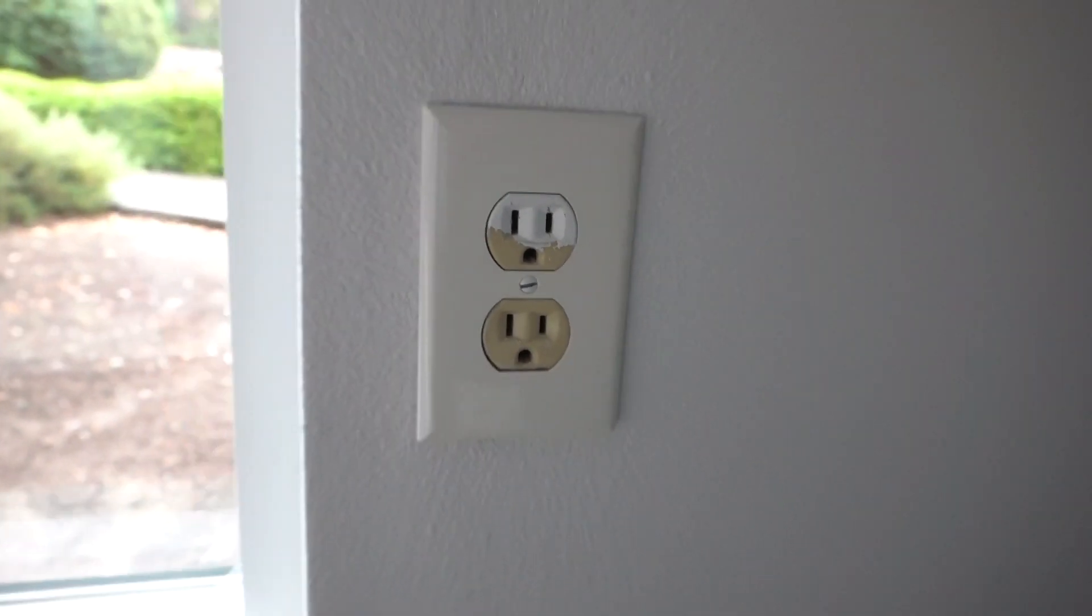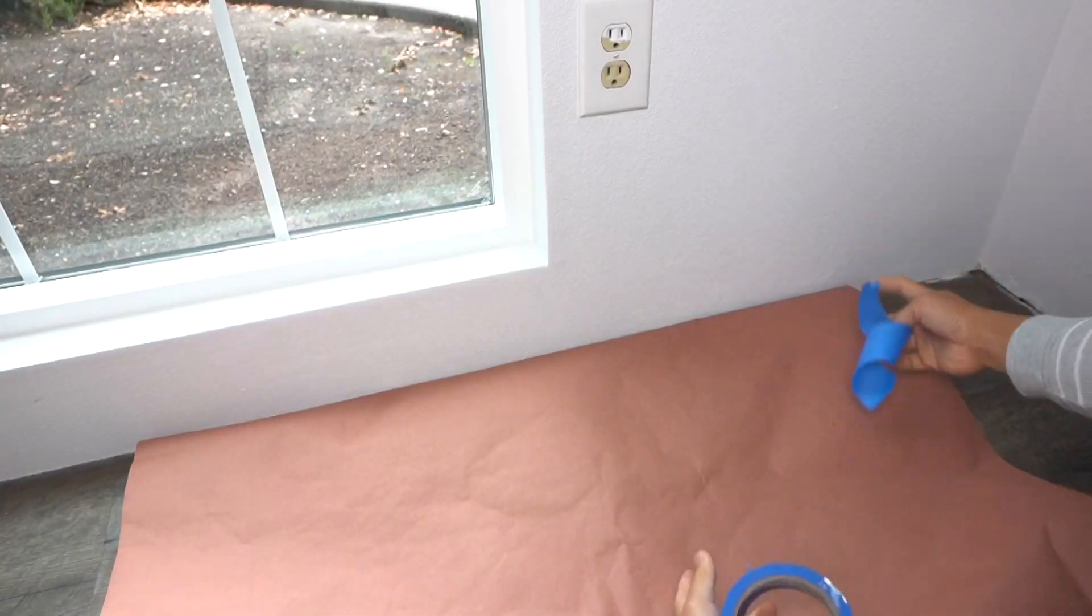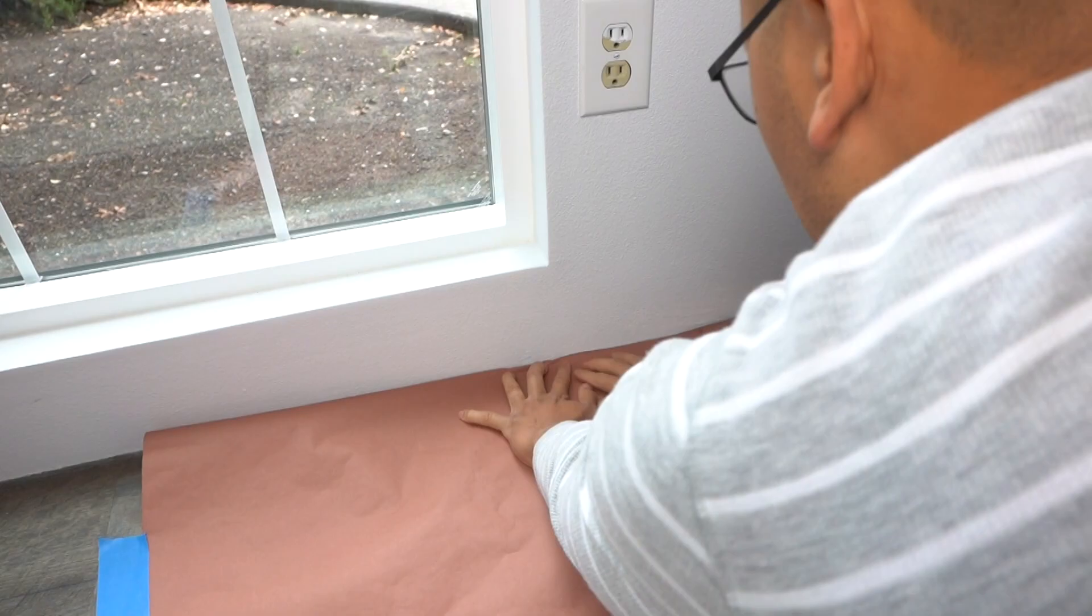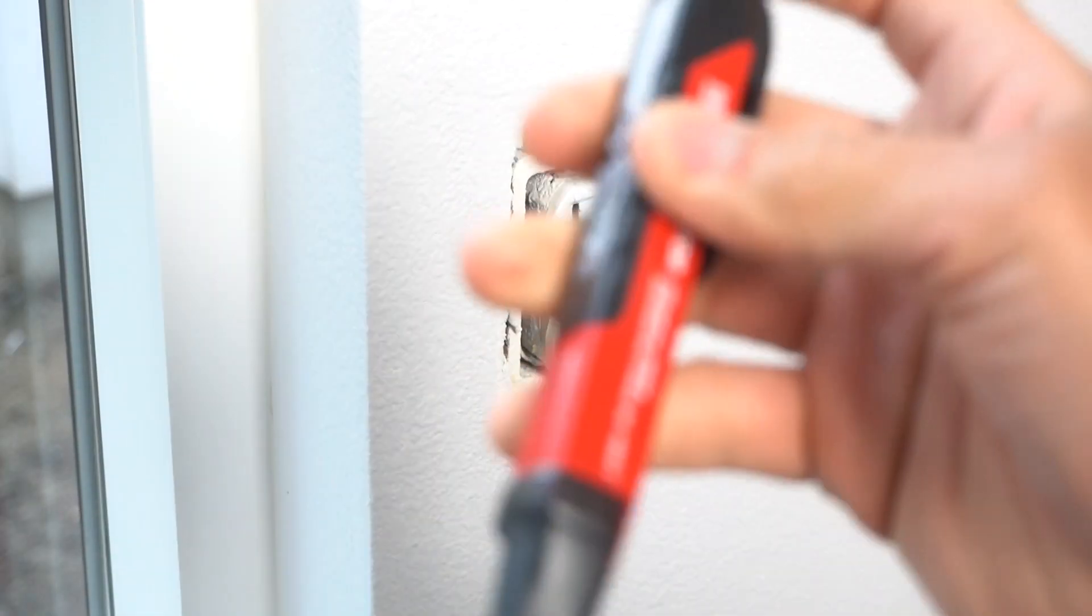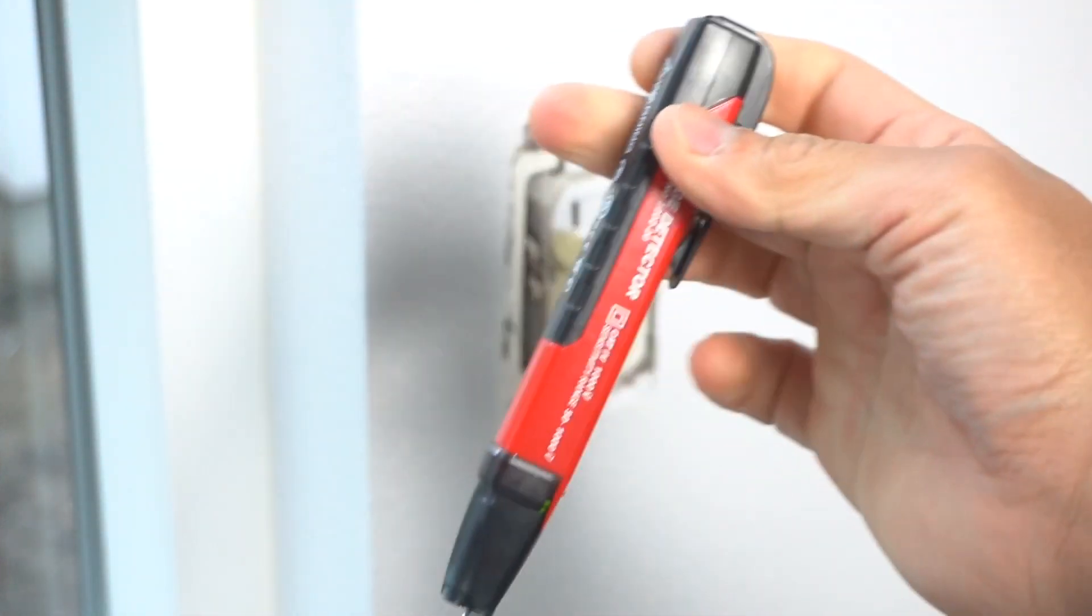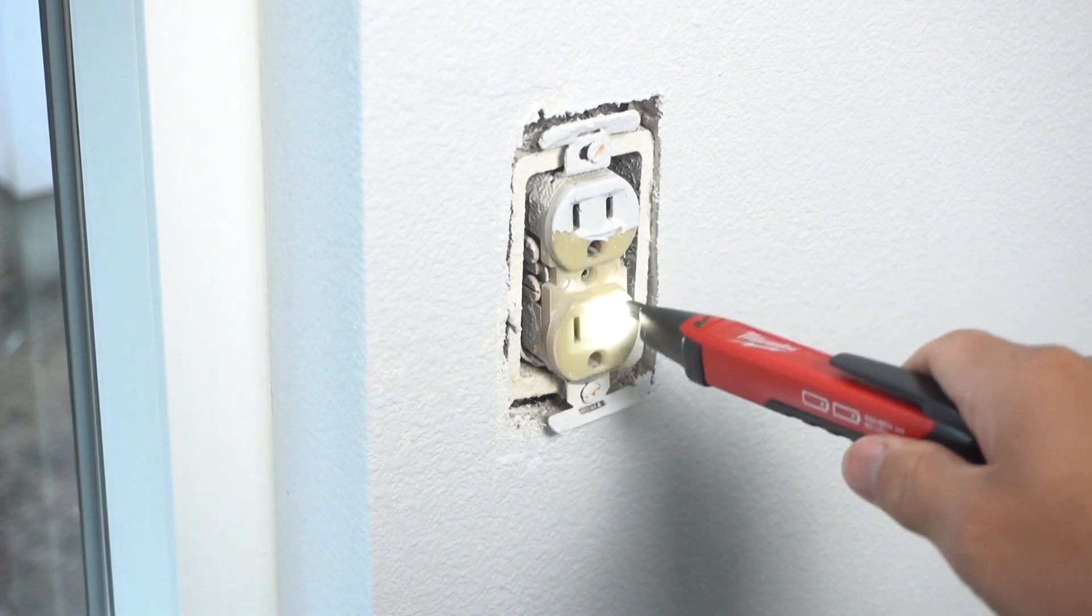This outlet has seen better days. It is painted from the old owner and I just want to change it out. But first, let's drop off the area because we're going to be creating some debris dust from the drywall. First things first, let's take out the cover plate from our outlet and we're going to be using a voltage detector. This one is by Milwaukee. I love using this thing. I don't do any electrical work without it. It saves my life every time.